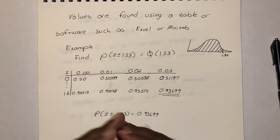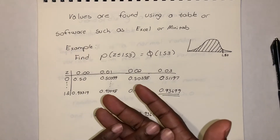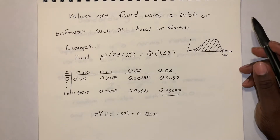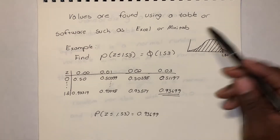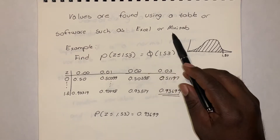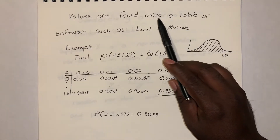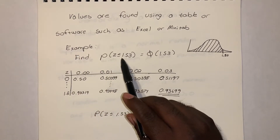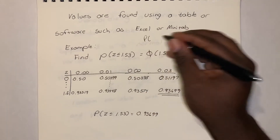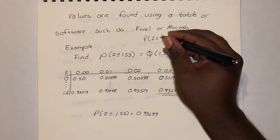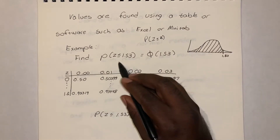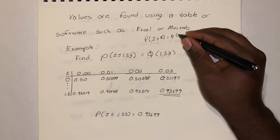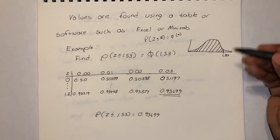The PDF looks complicated and is difficult to integrate, so most of the time we find probabilities using a table, Excel, or Minitab. Here we'll use a table. For example, to find P(Z ≤ 1.53): most tables are formatted as P(Z ≤ z), so we convert to φ(z) and search for that z value. It's fairly simple to look up on a table.